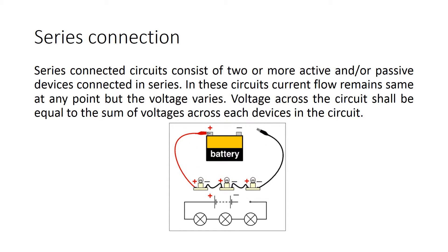Series connection. Series-connected circuits consist of two or more active and passive devices connected in series. In these circuits current flow remains same at any point, but the voltage varies. Voltage across the circuit shall be equal to the sum of voltages across each device in the circuit.